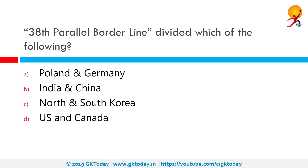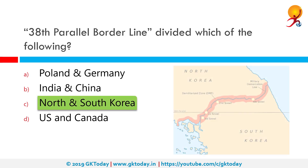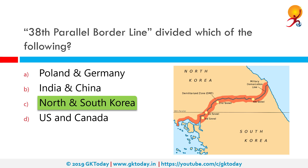The 38th parallel border line divided which of the following? The correct answer is North and South Korea. This line is a circle of latitude 38 degrees north of the earth's equatorial plane. It crosses Europe, the Mediterranean Sea, Asia, the Pacific Ocean, North America, and the Atlantic Ocean, and it forms the border between North and South Korea prior to the Korean War.